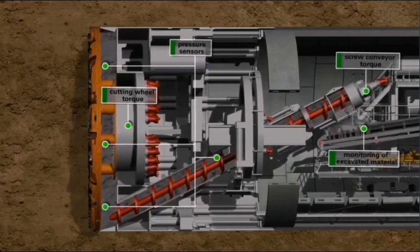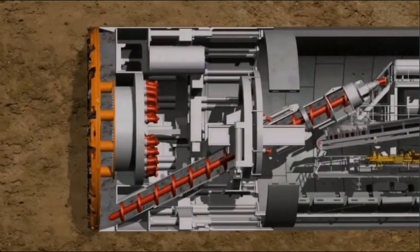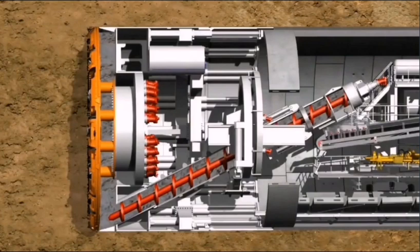When the tunneling phase is completed, cutting wheel and screw conveyor are stopped. Now the ring building phase starts in the shield area under atmospheric pressure conditions.